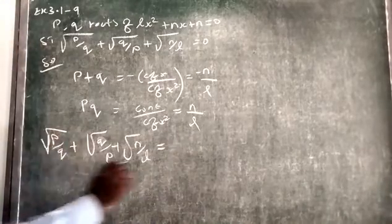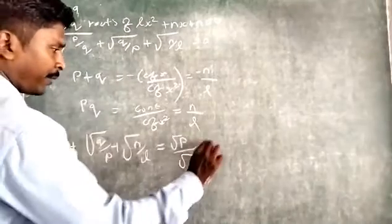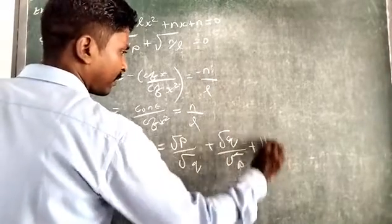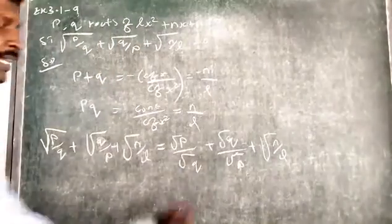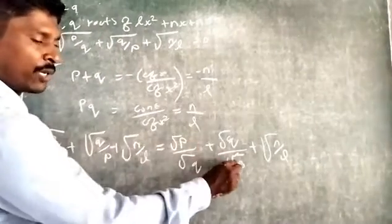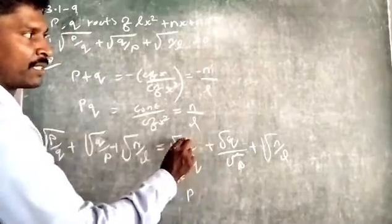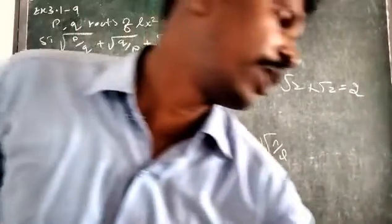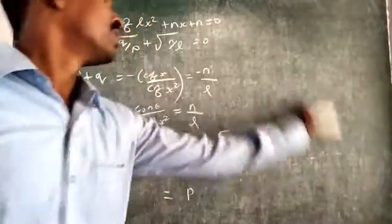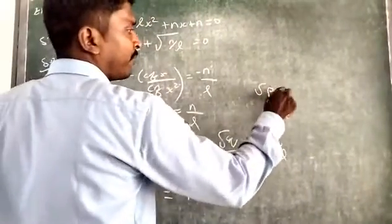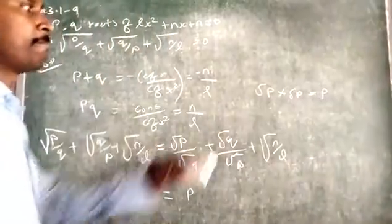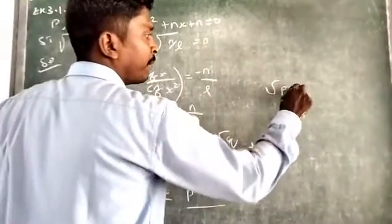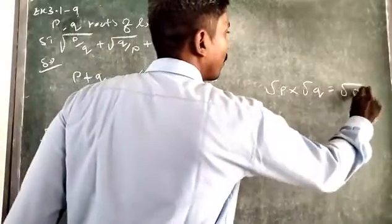Apply the common denominator. So, we write square root of B over square root of Q, plus square root of Q over square root of B. Then we take cross multiplication: square root of B into square root of B, plus square root of Q into square root of Q, giving B by Q. Then we can write square root of BQ.